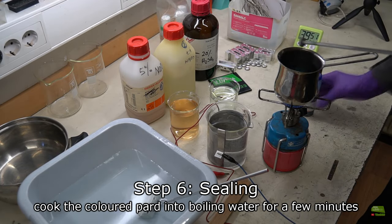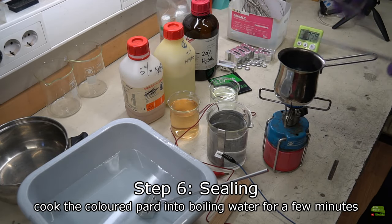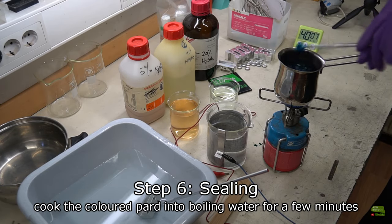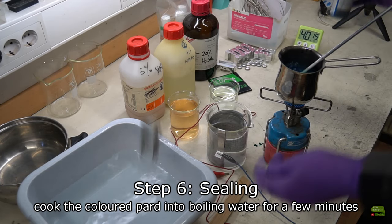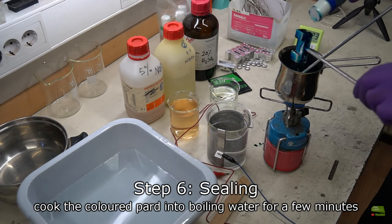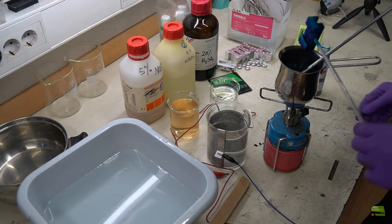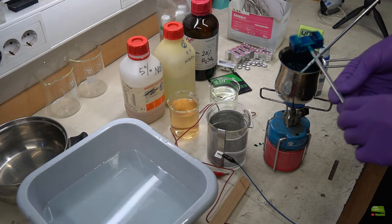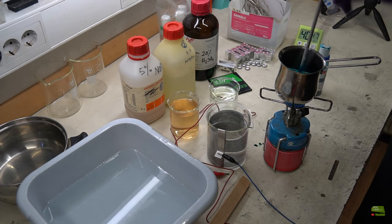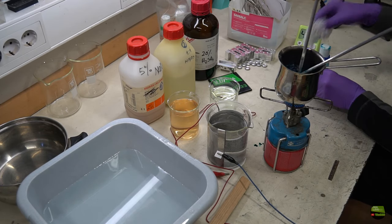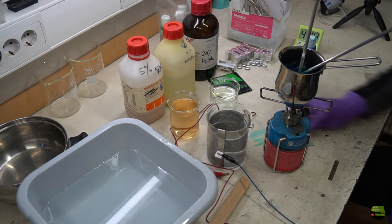Actually I do coloring and sealing in the same step because I get better results. First, put some distilled water in a pot and start heating. Then pour a few drops of color directly onto the part and then just put the part into hot water. And when the parts start boiling, leave it for a few minutes. It's easier because we skip one step and I get better results sealing in colored water.